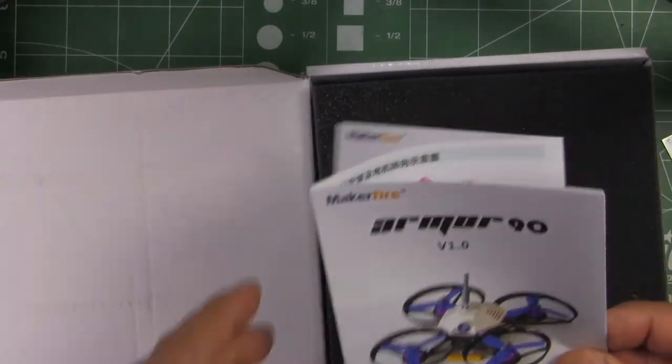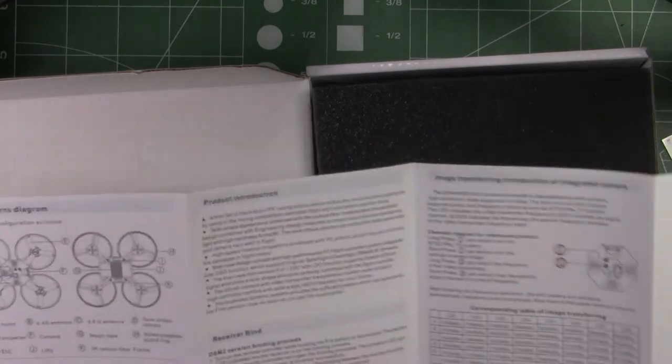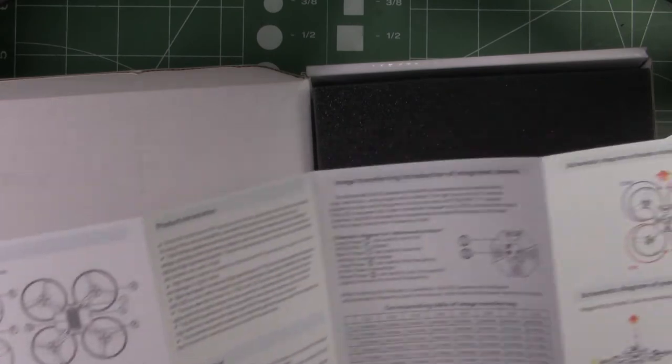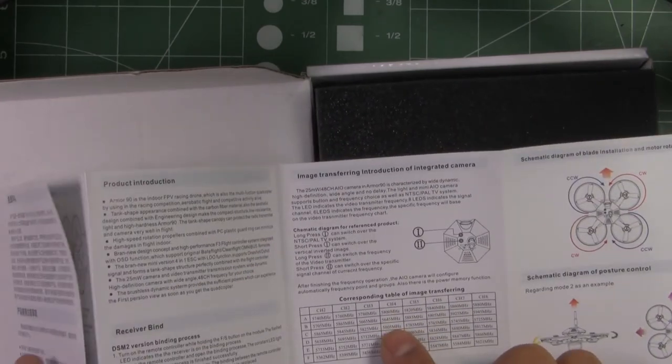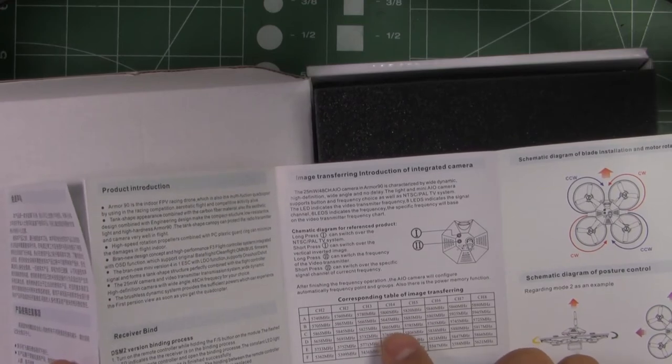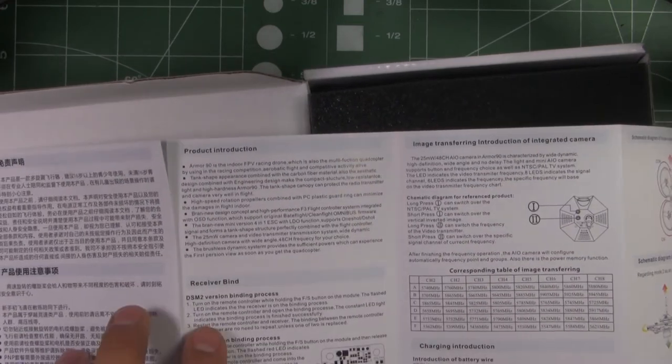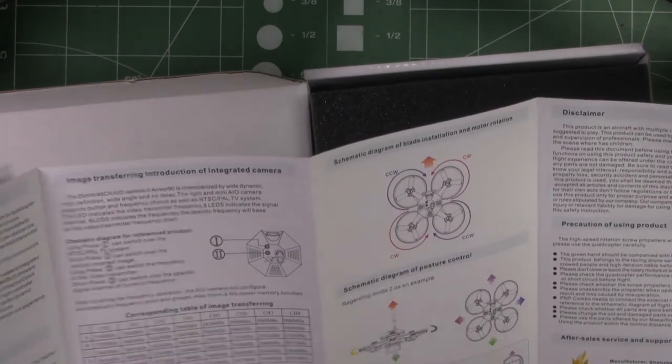They give you a set of instructions, looks like they're both in English and Chinese. Pretty basic instructions, they do give you the video transmitter frequency table, so that's good. Some information on the board, binding process for DSM2 and FRSky, and just some general information.